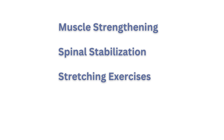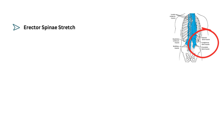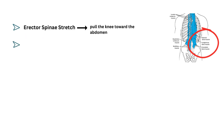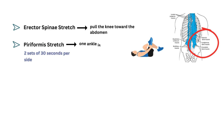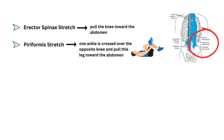Clinically proven effective exercises are: Erectospine Stretch — in supine position, the patient pulls the knee towards the abdomen. Piriformis Stretch — in supine position, one ankle is crossed over the opposite knee and this leg is pulled towards the abdomen.